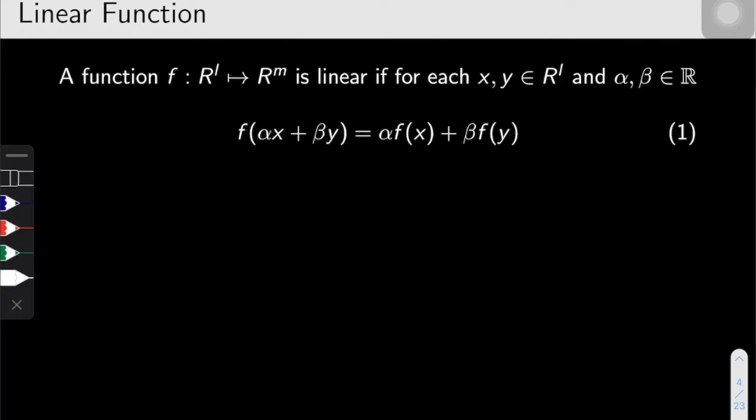In this video we are going to talk about the concept of linear function. A function f which is mapped from the domain R^l to the range R^m is linear if for each x, y element of the domain and any arbitrary number alpha, beta which belongs to the real number line, alpha and beta can be any decimal number, an irrational number, or any whole number or any number that is an element of R.